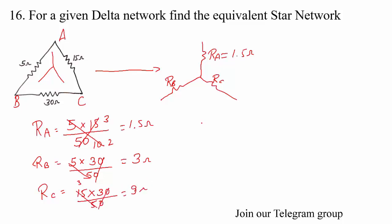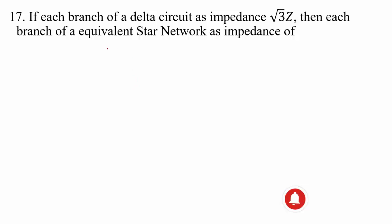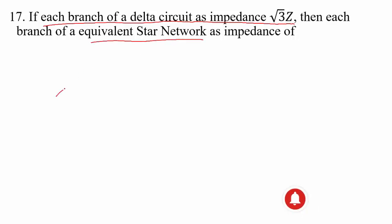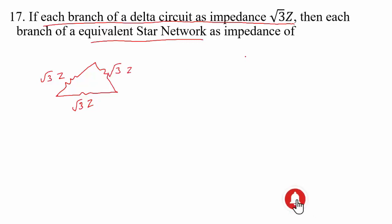So Ra = 1.5 ohms, Rb = 3 ohms, and Rc = 9 ohms — this is the equivalent star network. Moving on to question 17: if each branch of a delta network has an impedance of √3·Z, what is the equivalent star network? The impedance in the delta is √3·Z and we need to find the star equivalent.